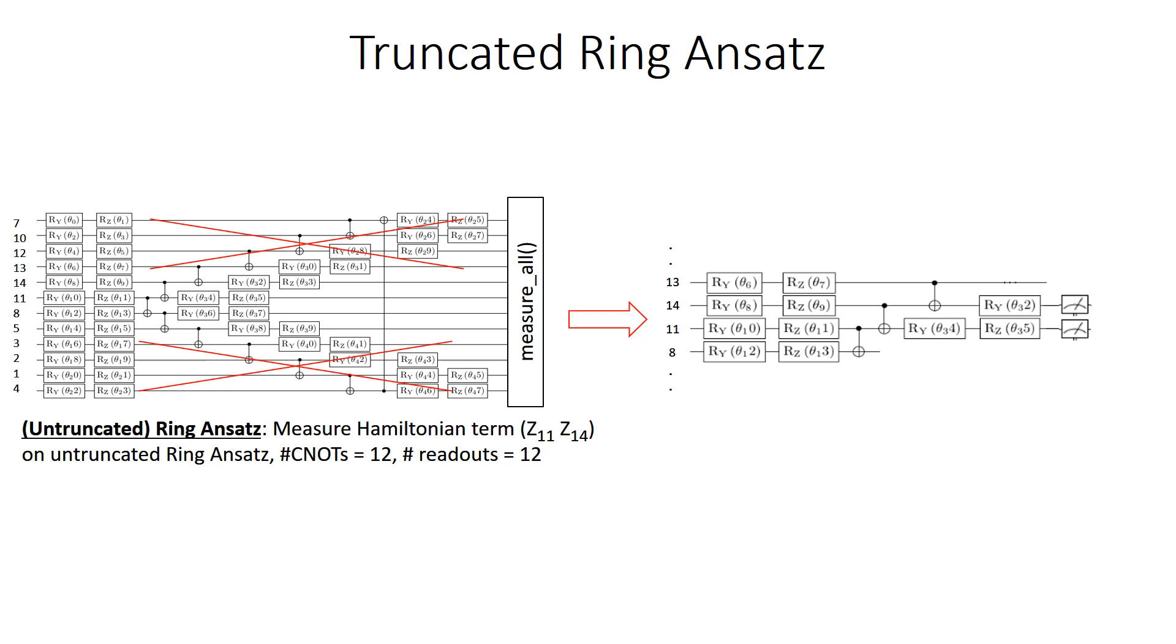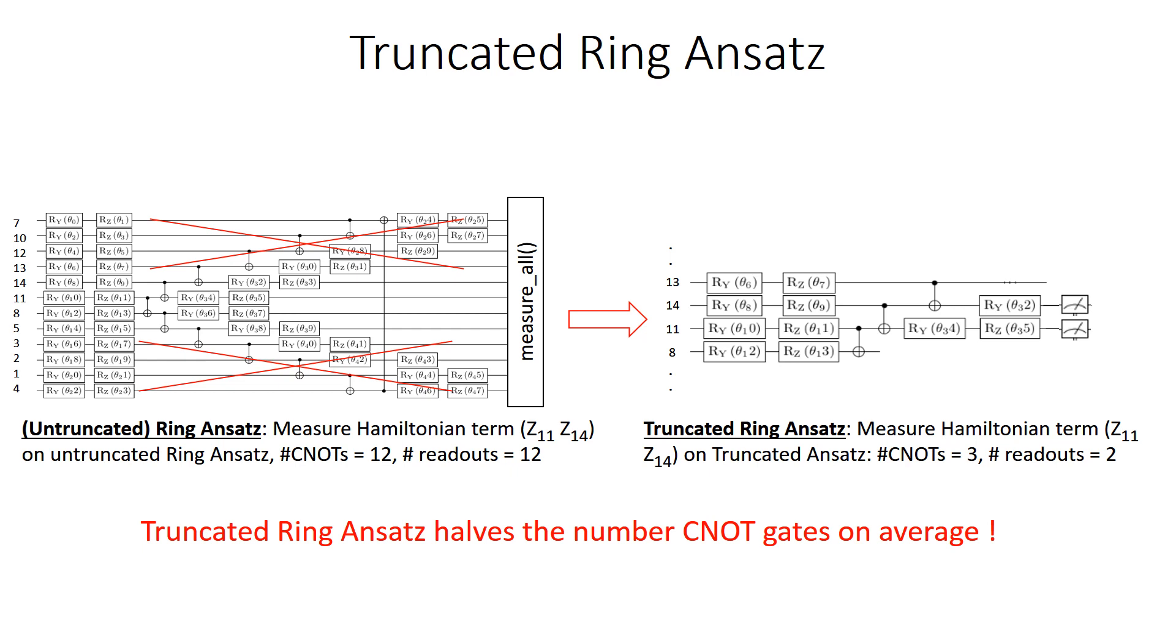Hence, in this case, we shall delete the part of the circuit which does not contribute or does not affect the measurement of the Hamiltonian term, sufficiently reducing the size of the circuit, as well as the size of the Hilbert space. And it turns out that the truncated ring ansatz tend to half the number of the CNOTs, and also the number of measurements are only 2 per circuit.